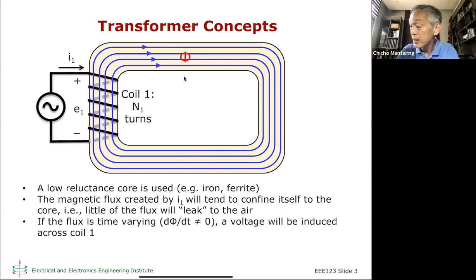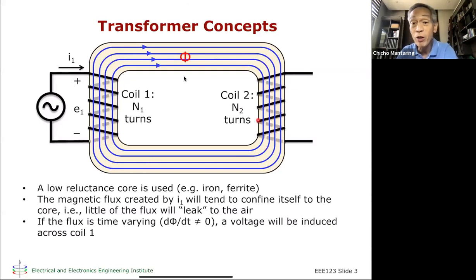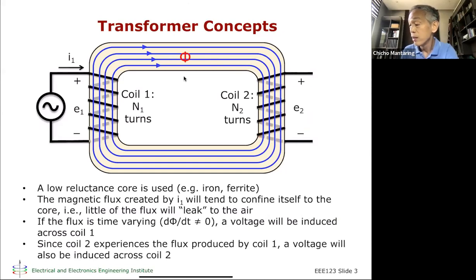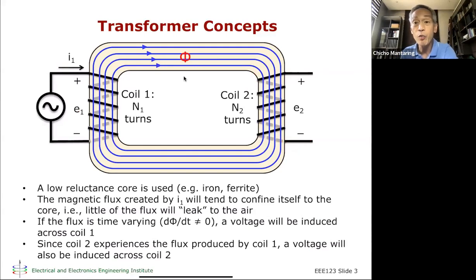If the magnetic flux is varying with time, you're going to get a voltage that is induced across coil one. Now if I put another coil here — let me call it coil two — that coil will experience the same magnetic field. So if this magnetic field is changing with time, I will also have a voltage induced across coil two. I have two voltages now: E1 is due to what we call self-inductance, and E2 is due to what we call mutual inductance. This current I1 produces a changing magnetic field that is felt by coil two, and because coil two is feeling a changing magnetic field, there will be a voltage induced across it. That's what we call mutual inductance.